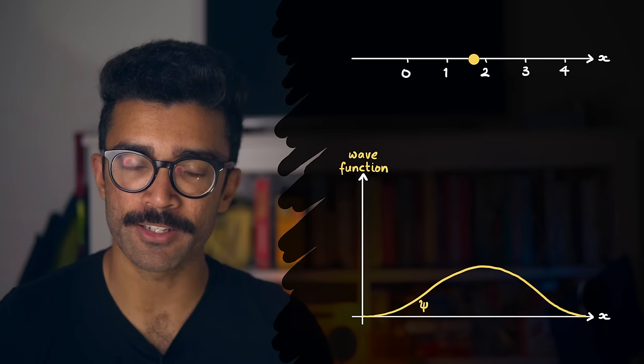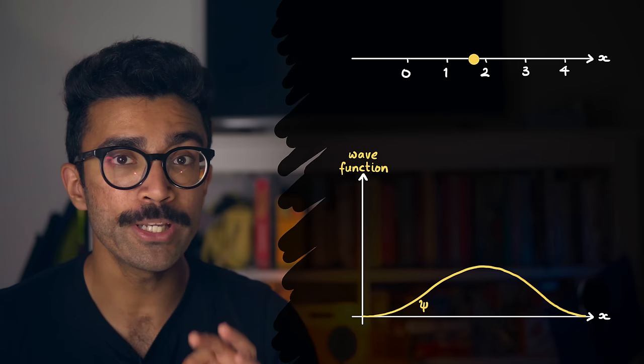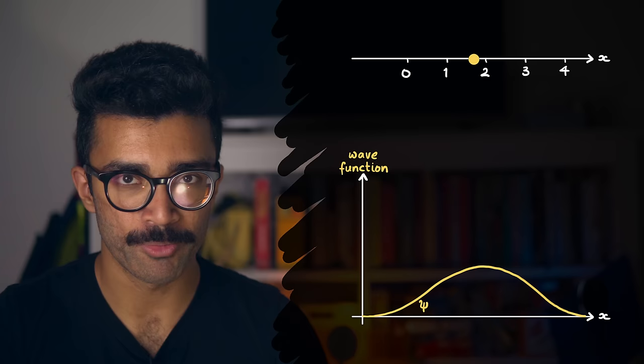If we did an experiment to find its position, to work out these probabilities, what we need to do is to square the wave function.